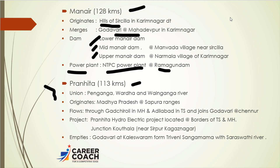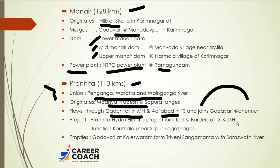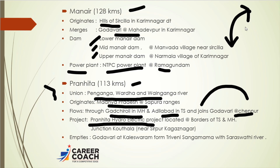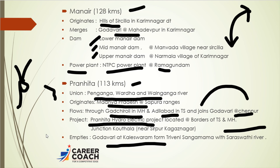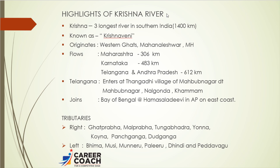The third important Godavari tributary is Pranahita, 113 kilometers in length. Pranahita is formed by the union of the Penganga, Wardha, and Wainganga rivers. It originates in Madhya Pradesh and the Satpura ranges, flows through Gadchiroli in Maharashtra and Adilabad in Telangana, and finally joins the Godavari at Chennur. The Pranahita Hydroelectric Project is located on the Telangana-Maharashtra border. Pranahita also forms a Triveni Sangam with the Godavari river and Saraswathi river at Kaleshwaram.